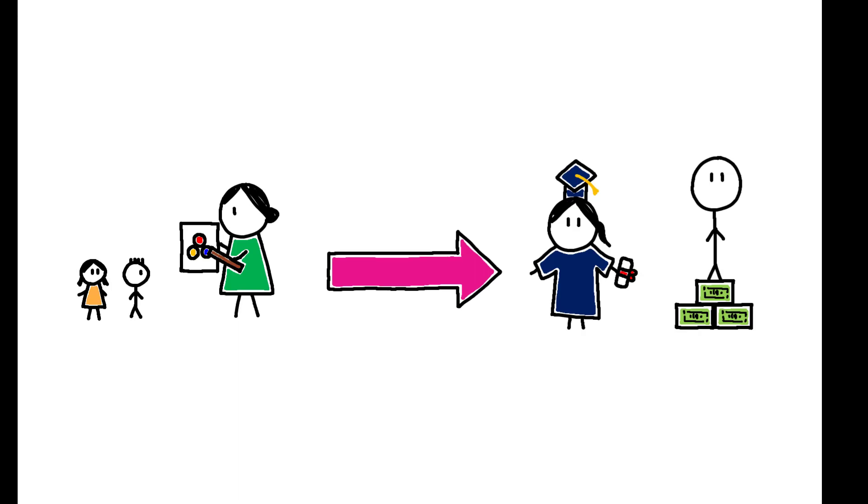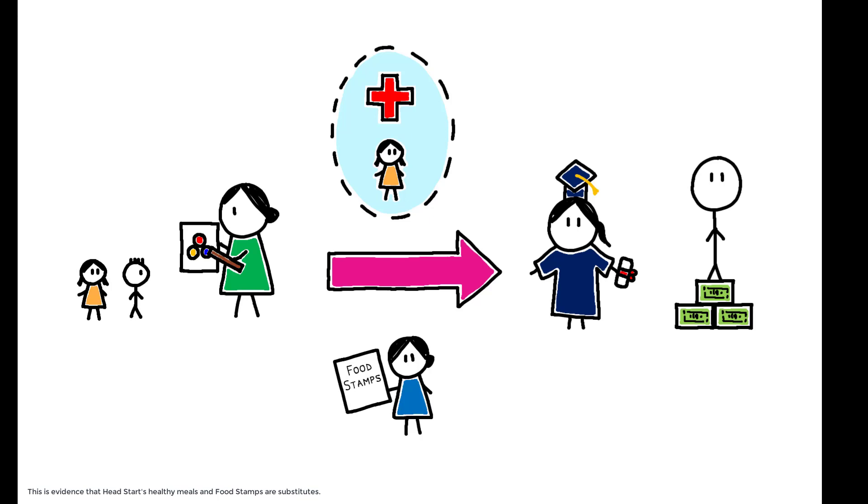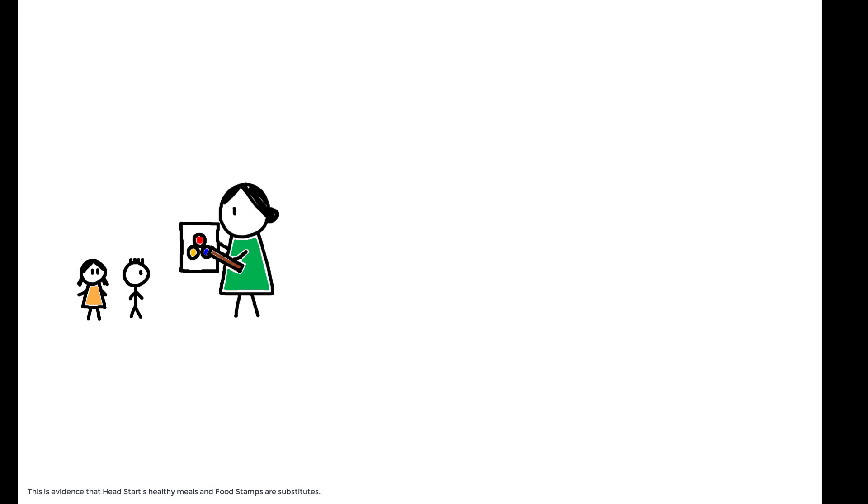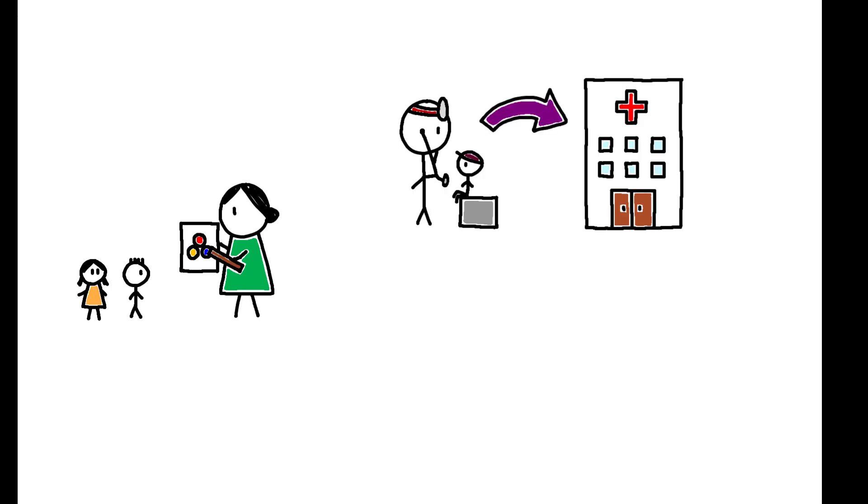Head Start's long-run impact is larger in areas where children have greater access to health services through Medicaid, and is smaller for children with more access to food stamps. This suggests that beyond its preschool curriculum, the program's provision of screenings and referrals to health services, as well as more nutritious meals, are important mechanisms.